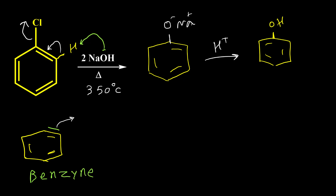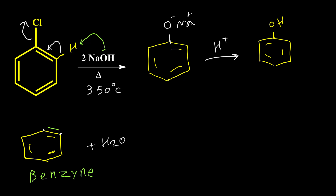This new pi bond is a distorted pi bond and it is not formed from p orbitals. It is formed from sp2–sp2 overlapping, so the hybridization of this carbon, even with the triple bond, is still sp2. We also have water as a side product.